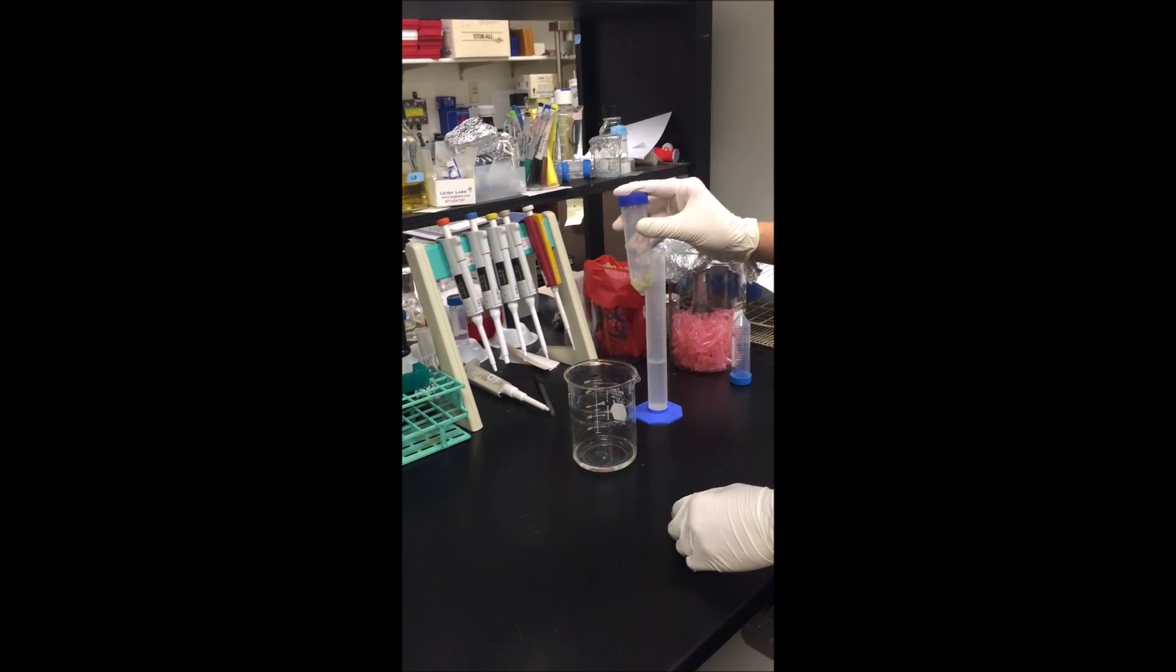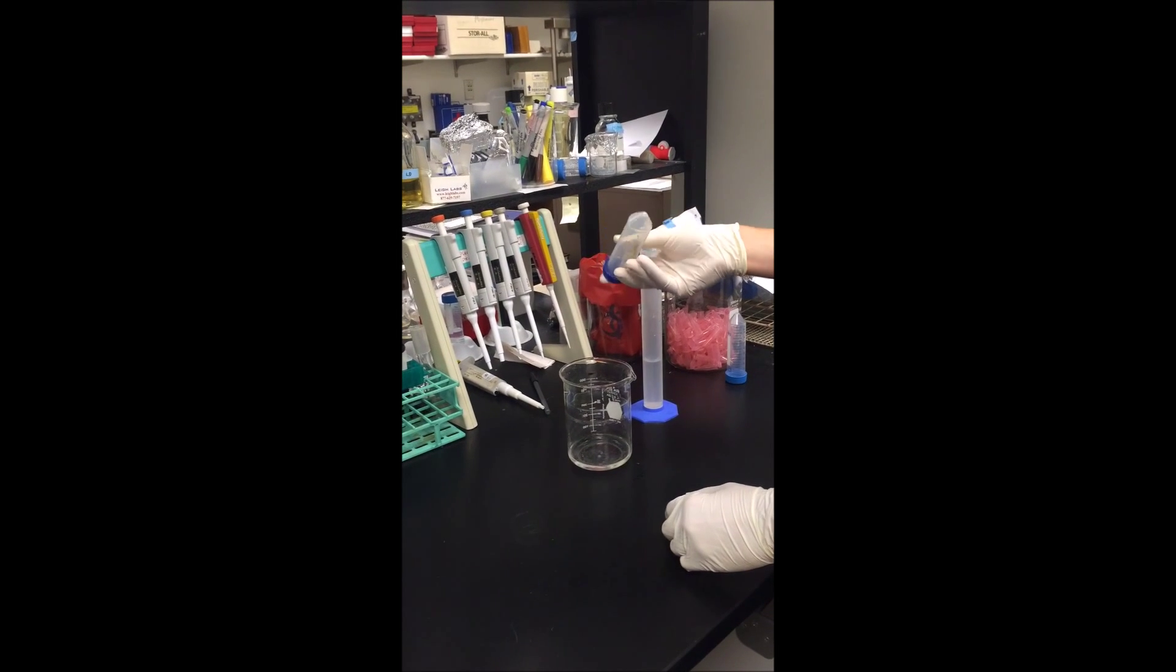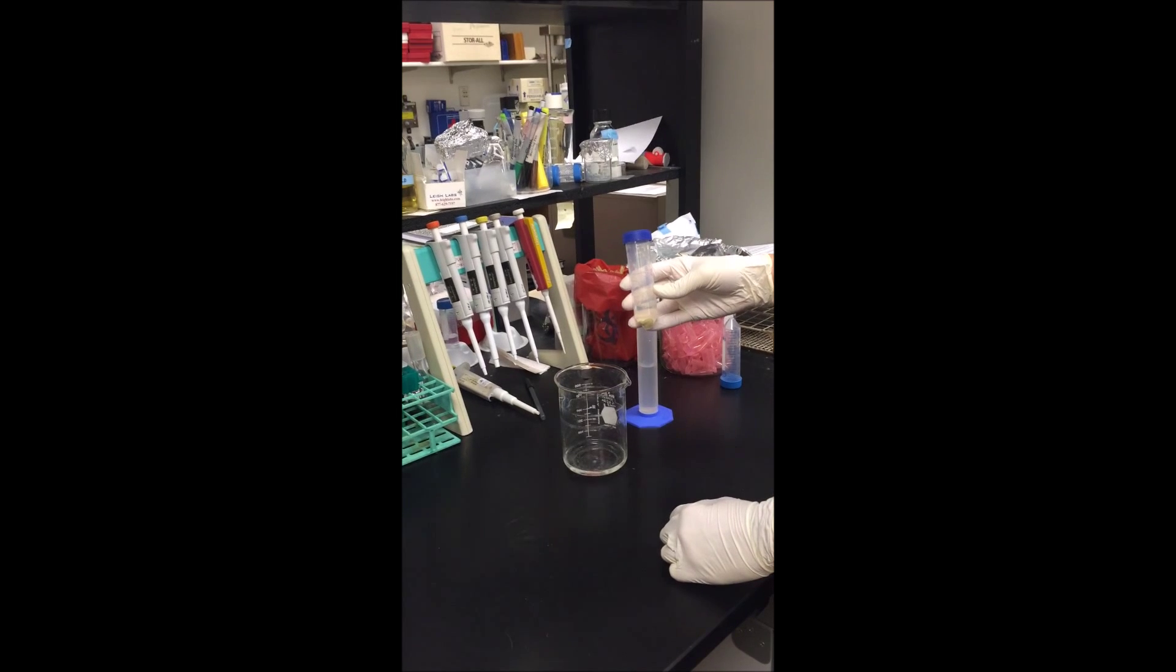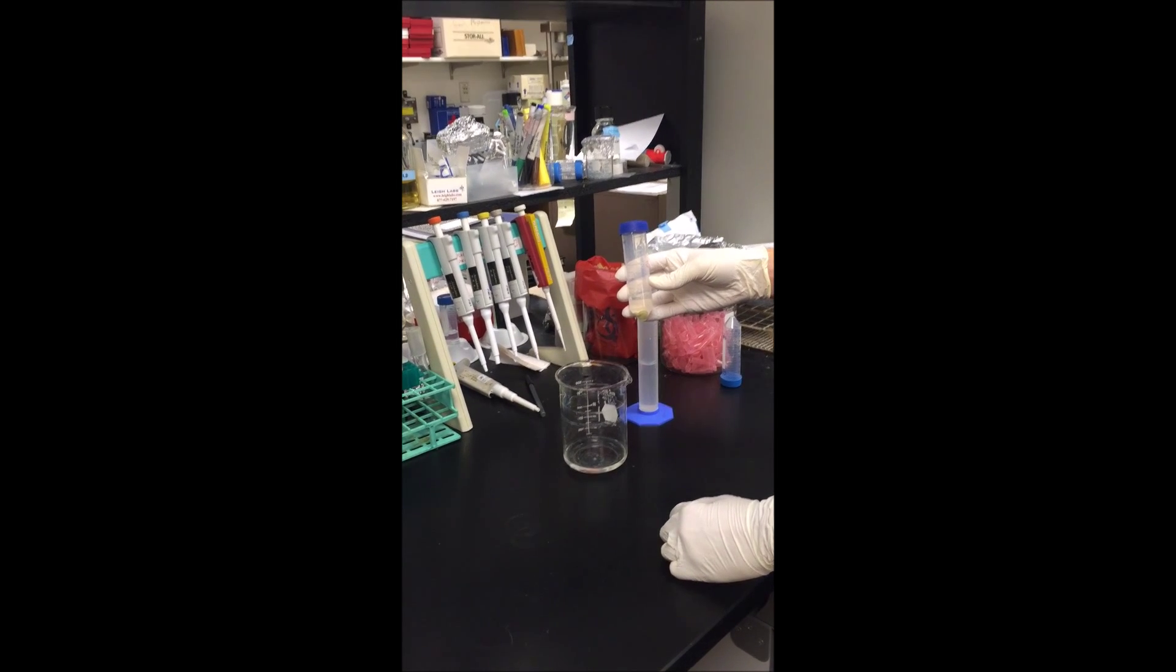Again, you want to invert the seeds gently. Don't shake. You don't want the seeds to crack. Now you're going to do this rinse four times and each time you rinse, you want to let the seeds sit for approximately five minutes in the sterile water.